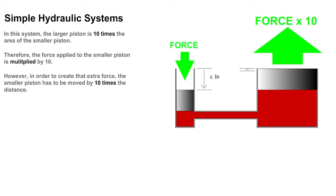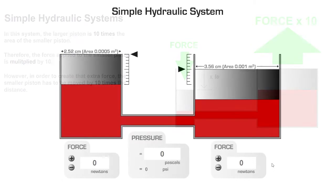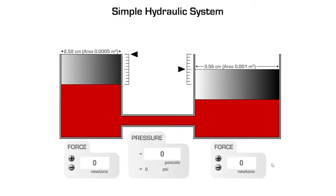So, let's now test your understanding using a working model. As you can see, in this model, the larger piston on the right has twice the surface area of the smaller piston on the left.